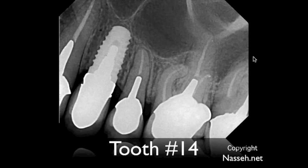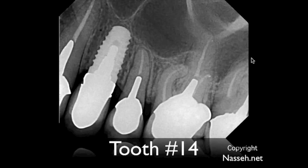The decision was between doing an apicoectomy — essentially cutting off the root end and placing a retrofilling — or approaching the tooth coronally and doing a retreatment. Since a post was present and there was no lesion associated with the other two canals, and since apicoectomy on a root where root canal therapy was not previously done has a low success rate — essentially all we're doing is placing a 3mm retrofilling on a root which is entirely infected — the best approach in such cases has been shown to be a conventional retreatment.